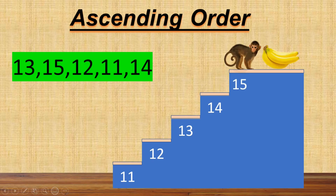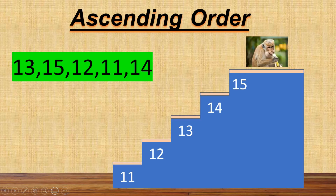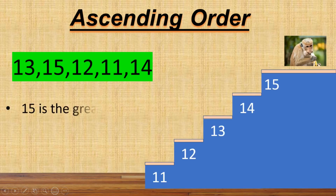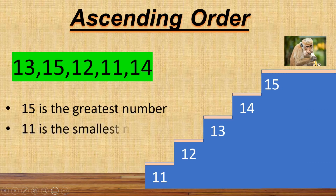So finally, Mr. Bingo got his banana. He looks happy, right? With all your help, Mr. Bingo got his banana. Among these numbers, number 15 is the greatest number and 11 is the smallest number.